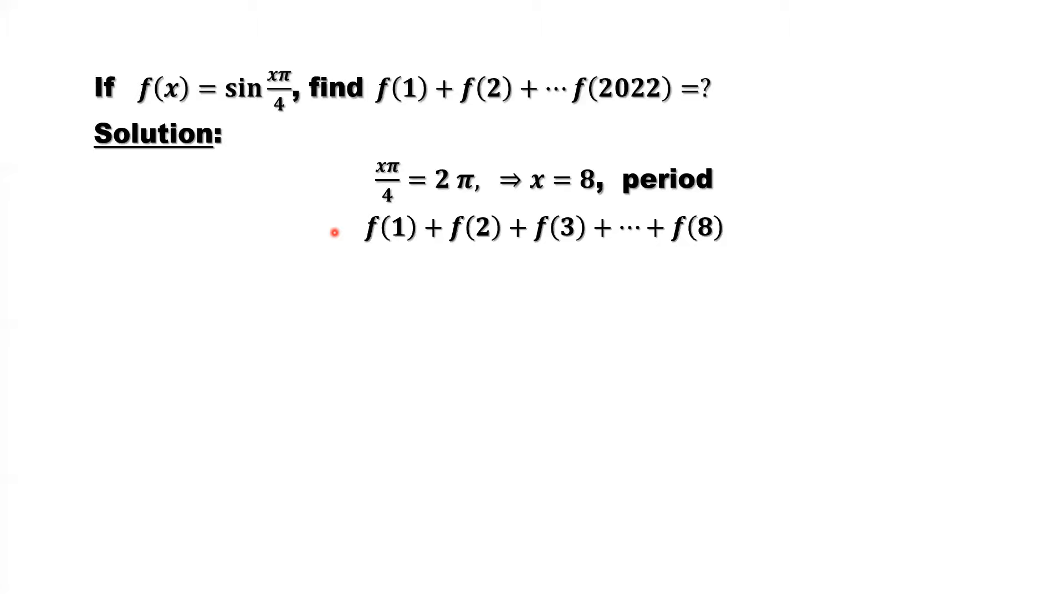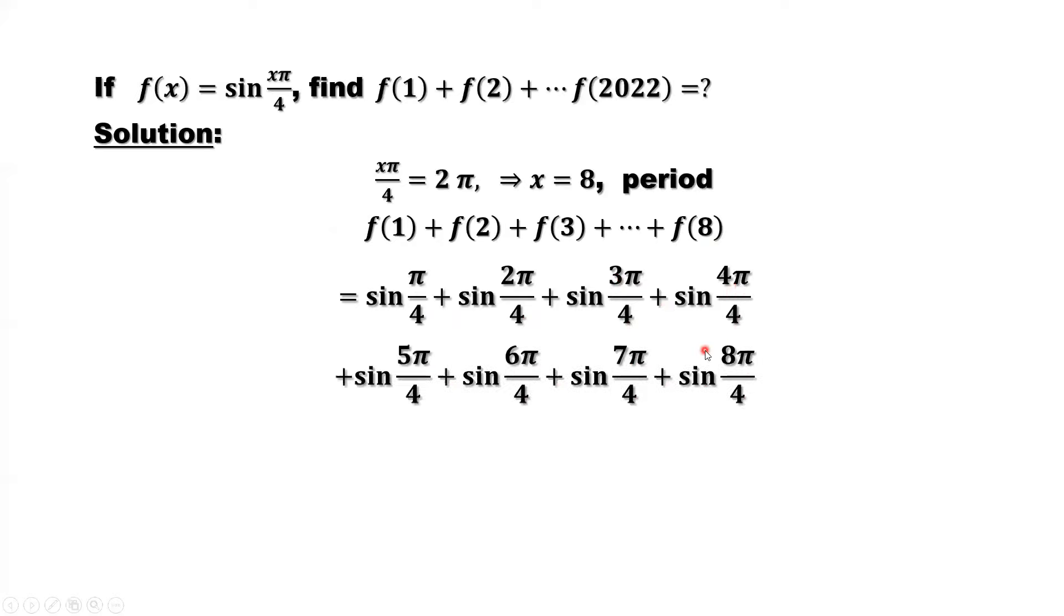Just check the sum of first 8 items. Plug in. You will see that's sine pi over 4, sine 2 pi over 4, sine 3 pi over 4, sine 4 pi over 4, and so on. Last one is sine 8 pi over 4. Those angles are special angles. We know those values.